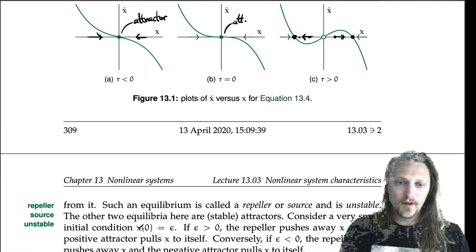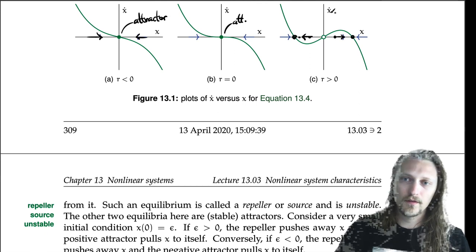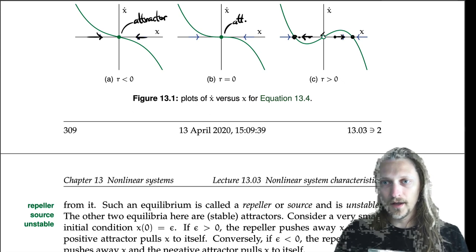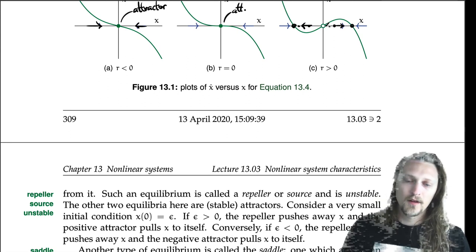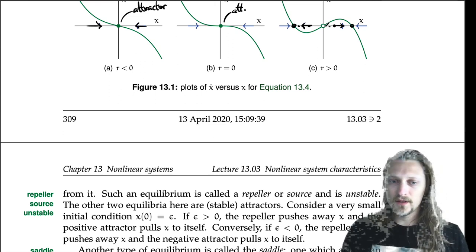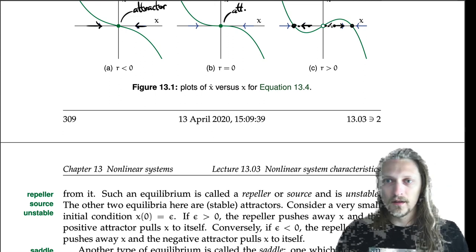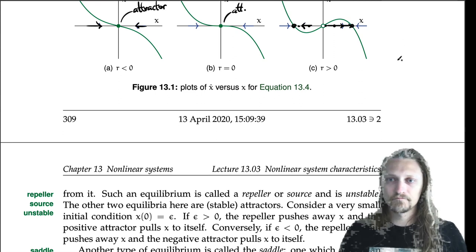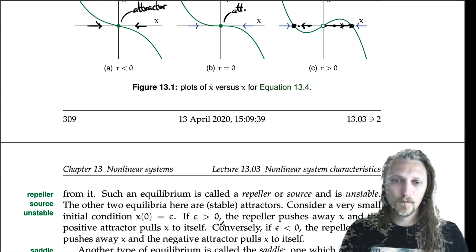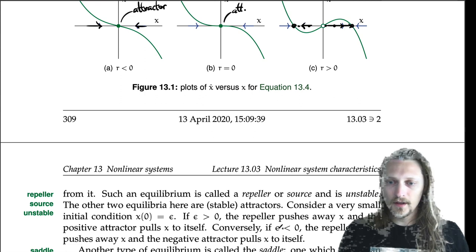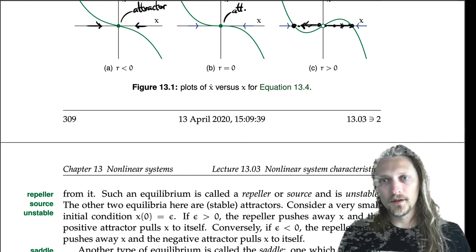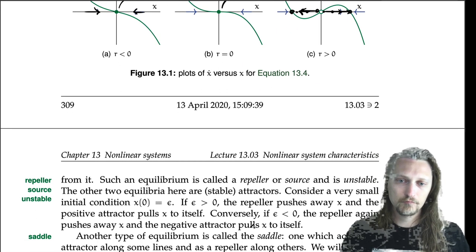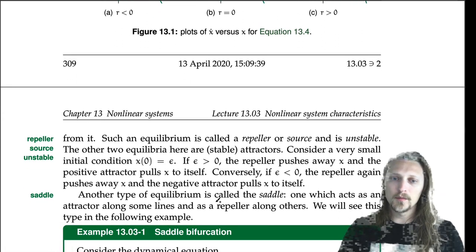Consider a very small initial condition x(0) equals epsilon, just a little bit left or right of the origin. If epsilon is greater than zero, the repeller pushes x away and the positive attractor pulls x to itself — the state moves all the way to the positive equilibrium value and never returns to x equals zero. Conversely, a slightly negative epsilon causes the state to move leftward until it reaches the negative attractor.